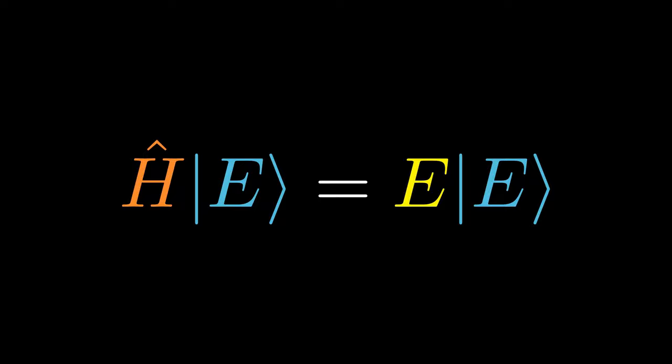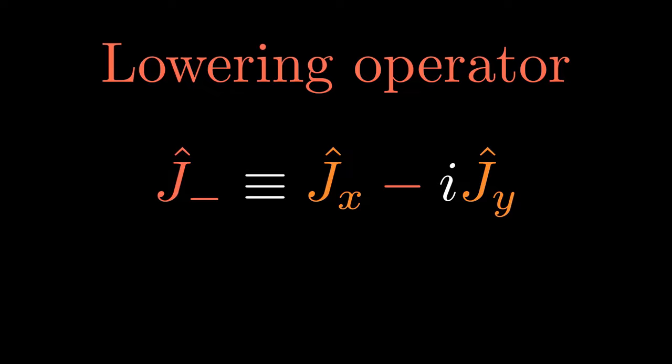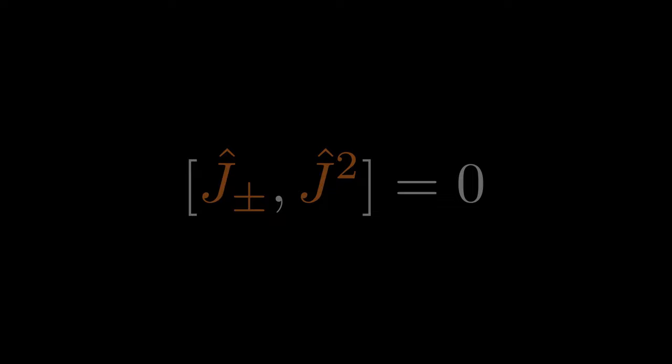Remember how we extracted the energy spectrum in a quantum harmonic oscillator by introducing the ladder operators? The ladder operators were the creation and annihilation operators. The eigenvalue equation we were trying to solve is the time-independent Schrödinger equation. We will now use almost the identical strategy to extract the spectrum of angular momentum. We first define the raising operator J+ and lowering operator J- by the following equations. It is important to realize that J+ and J- are Hermitian conjugates of each other, which directly follows from the definition.